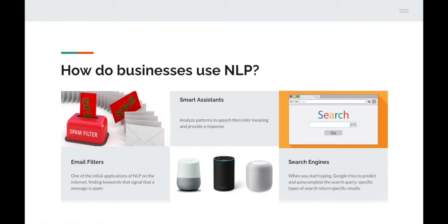Next up is smart assistants. We say 'Alexa' or 'OK Google' all the time. Smart assistants analyze patterns in speech, then infer the meaning and provide a response. If you remember smart assistants from a long time ago, you had to be very specific. But notice you don't need to be that verbose anymore — you can ask Siri 'will I need a raincoat today?' and it will infer that a raincoat relates to weather and give you a result saying whether it's going to rain.